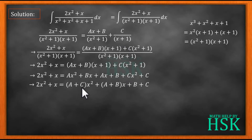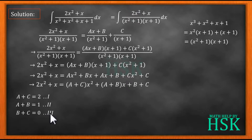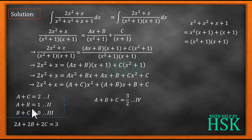Comparing coefficients: the coefficient of x² gives A + C = 2, which I mark as equation 1. The coefficient of x gives A + B = 1, marked as equation 2. The constant term gives B + C = 0, marked as equation 3. Now I add all three equations together to get 2A + 2B + 2C = 3, or A + B + C = 3/2, which I mark as equation 4. Adding was useful because all three variables appear together.